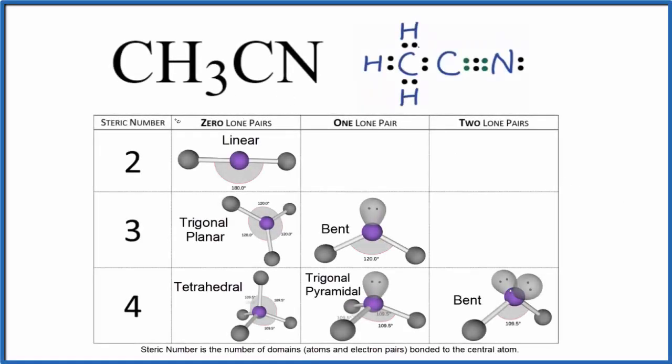In this video, we'll look at the molecular geometry and the polarity for CH3CN. This is acetonitrile.